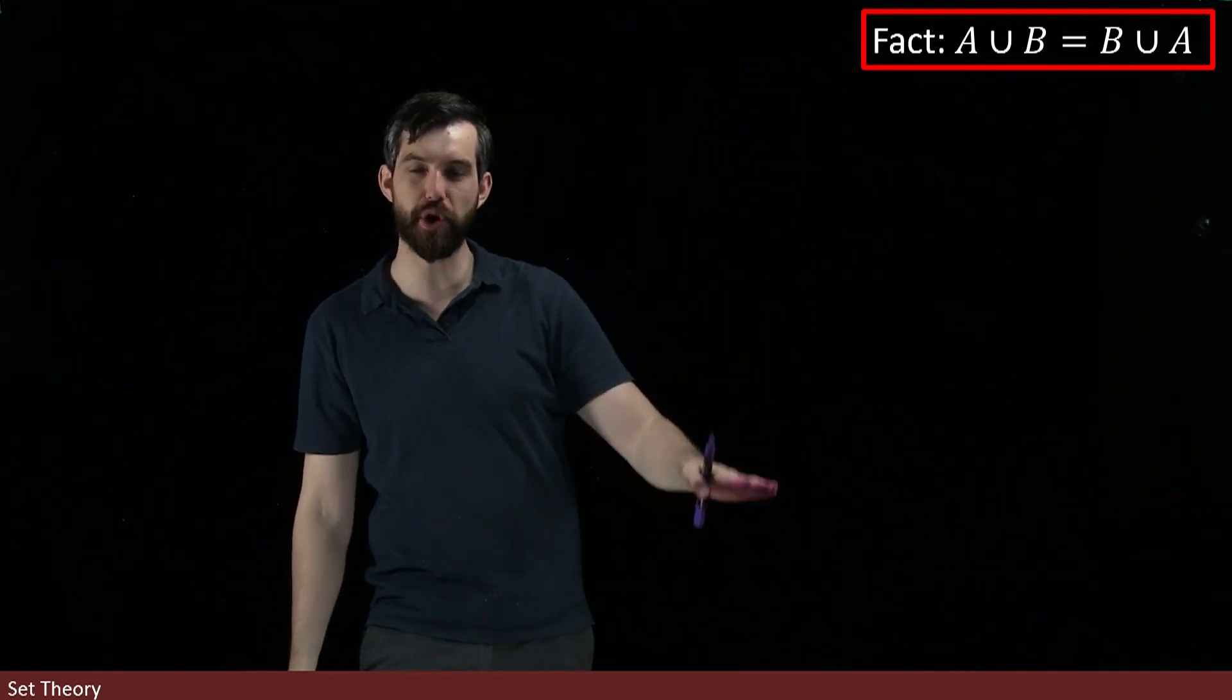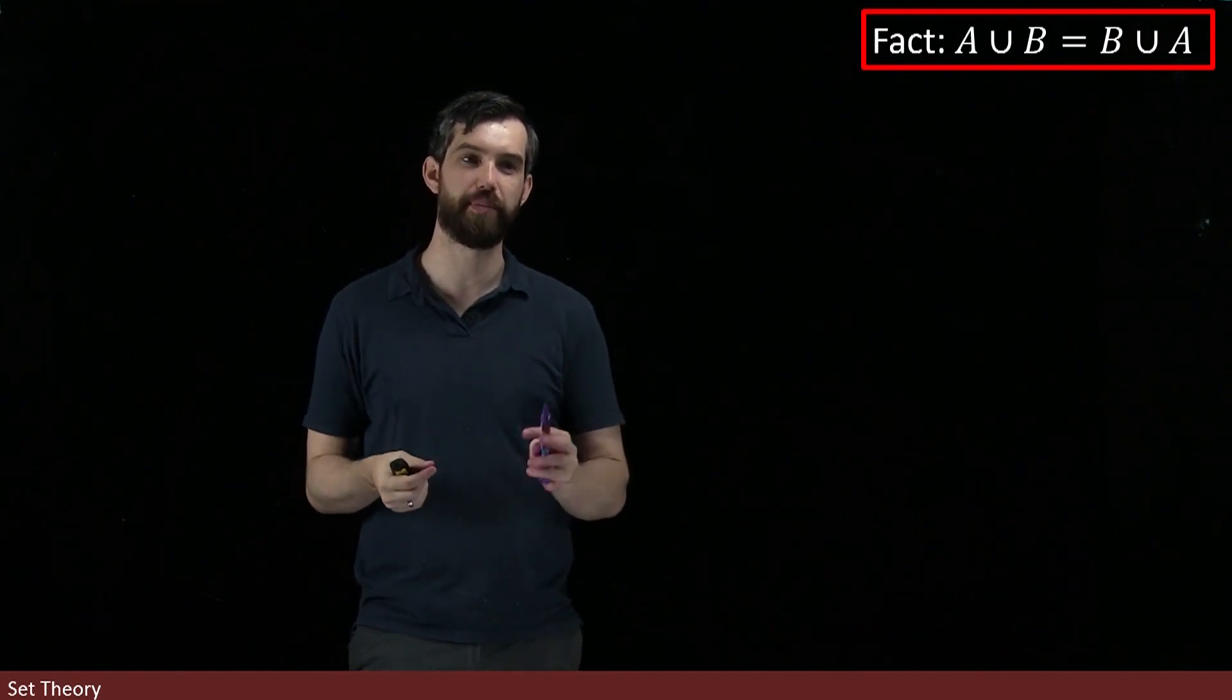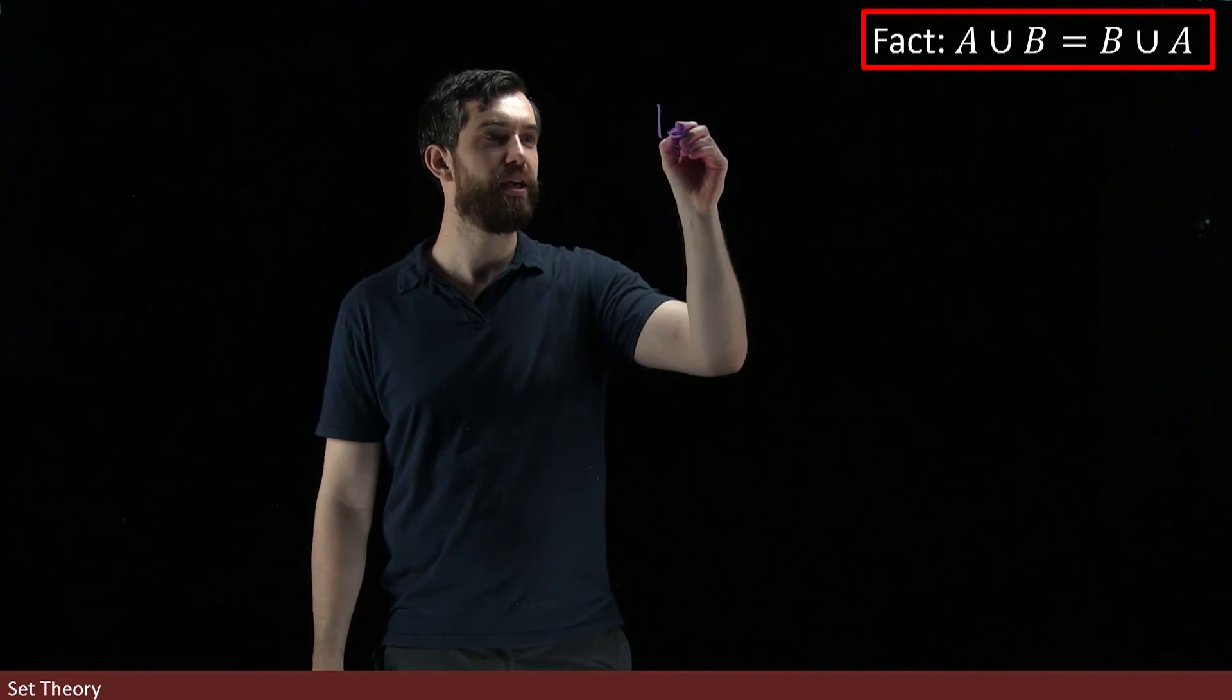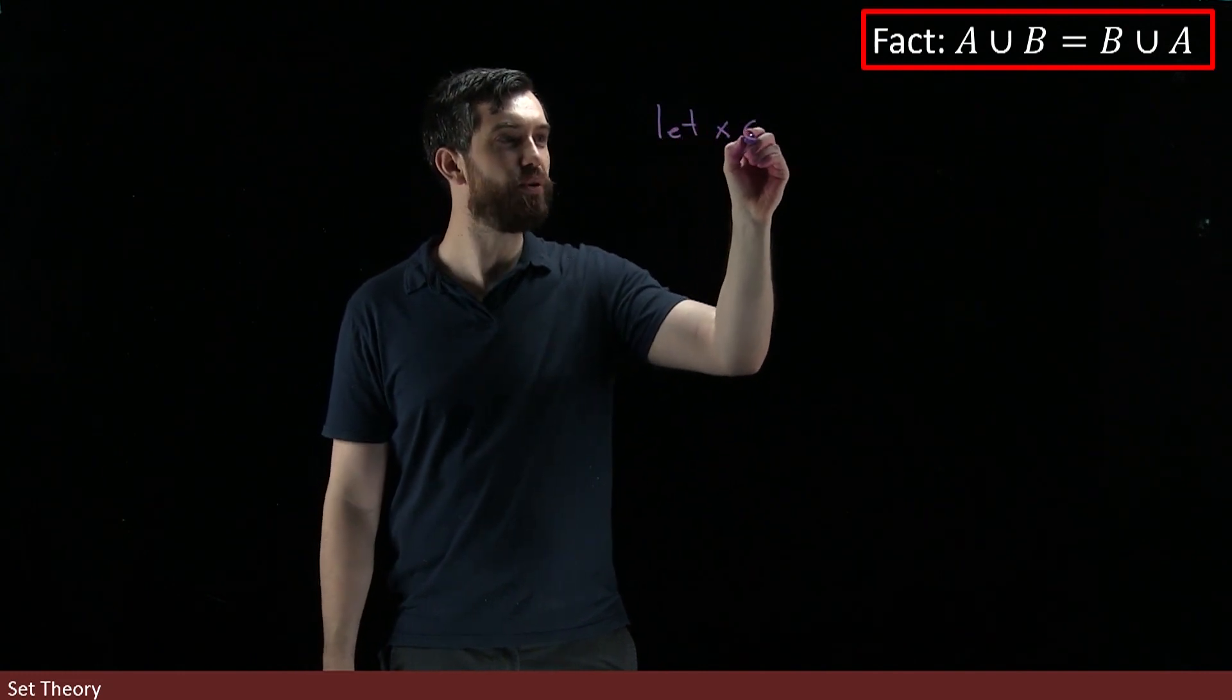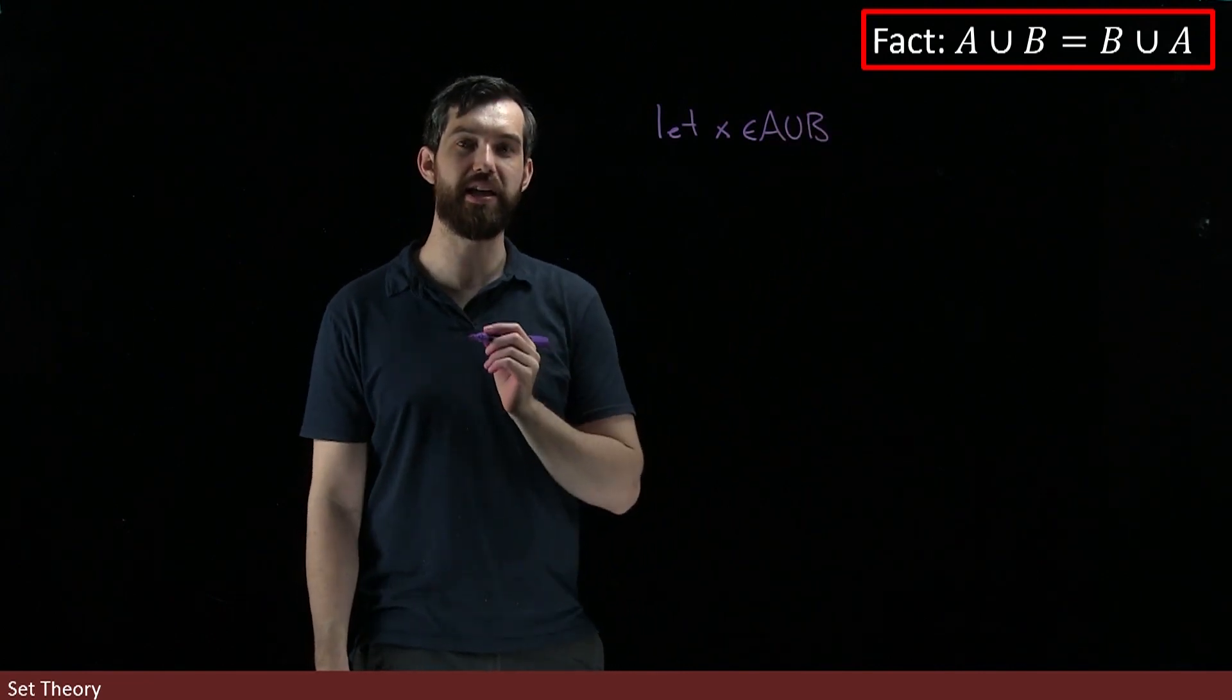So I'm going to use the element method, namely I'm going to start with an element X which is inside of the A and the B. It's inside of A union B.